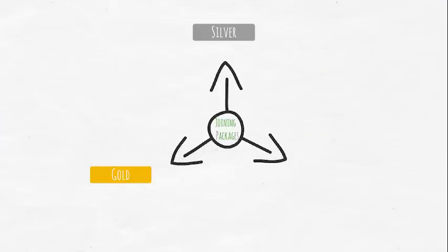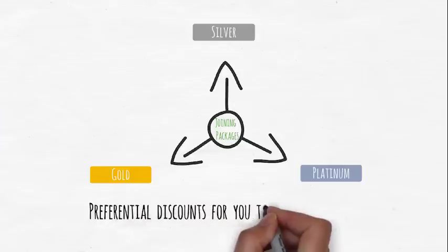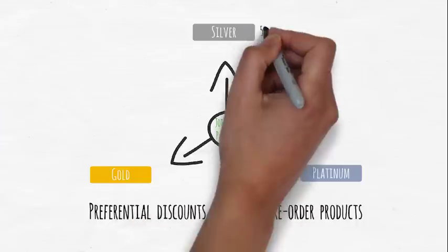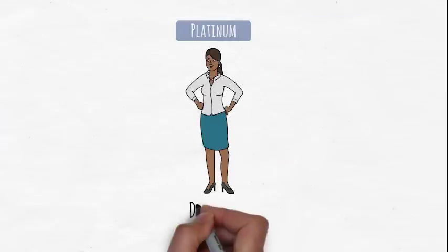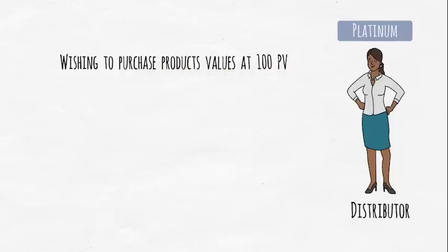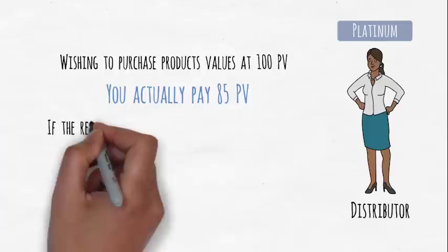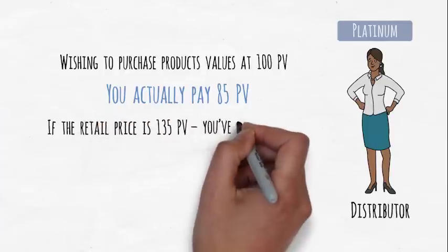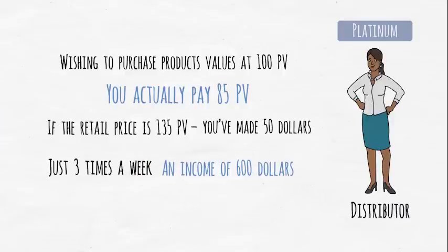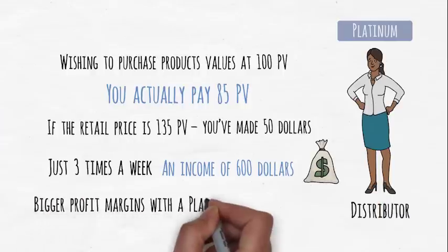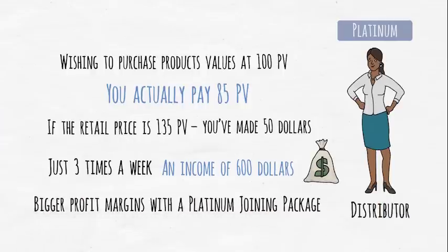Silver, gold, and platinum joining packages offer preferential discounts for you to reorder products. If you choose a silver joining package, you have a 5% discount, gold joining packages have 8%, and platinum joining packages have 15% discount off our distributor prices. This means that if you're a platinum distributor wishing to purchase product values at 100 PV, you actually pay 85 PV. If the retail price of that stock is 135 PV, you've made $50. If you were to do that just three times a week, you'll have an income of $600. In other words, you can expect bigger profit margins with a platinum joining package.